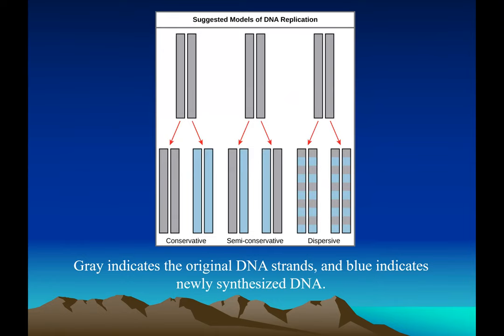The next question is: how does DNA replicate? There were several theories. One said both strands are conserved — the conservative method. Watson proposed the semi-conservative method: one strand is preserved and acts as a template for a new daughter strand to be made. A third theory, the dispersive method, proposed alternating mother and daughter strand segments. However, experiments proved that DNA replication occurs by the semi-conservative method.